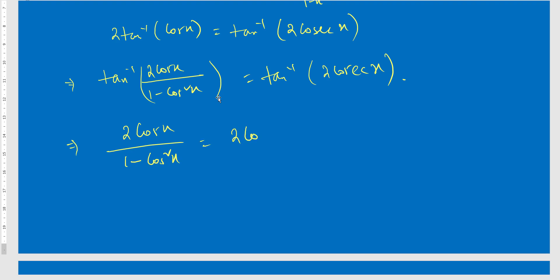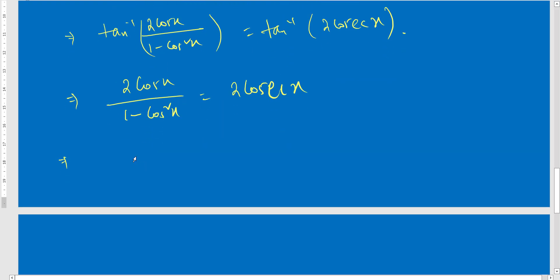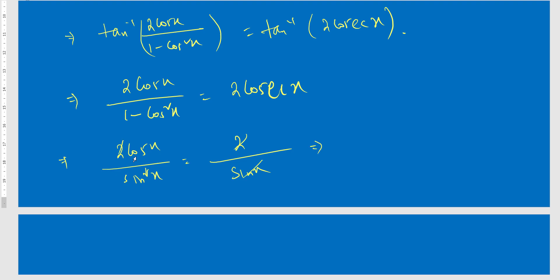Applying the formula with x replaced by cos x: 2 tan⁻¹(cos x) = tan⁻¹(2 cos x / (1 − cos²x)). Since 1 − cos²x = sin²x, this becomes tan⁻¹(2 cos x / sin²x). Setting this equal to tan⁻¹(2 cos x), the 2 cos x cancels, leaving cos x / sin x = 1.